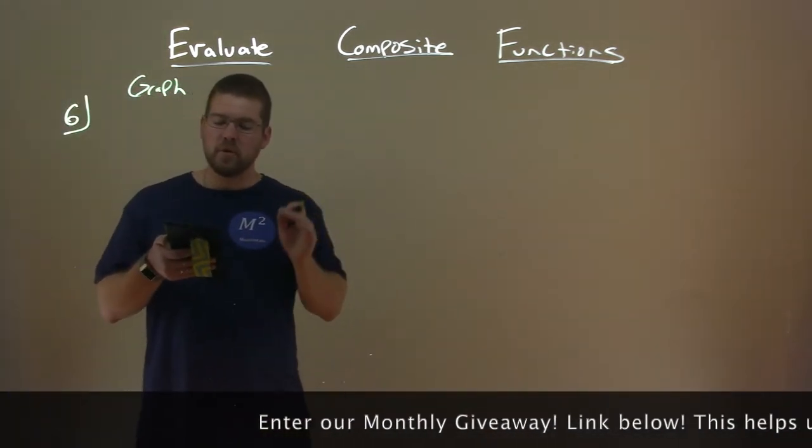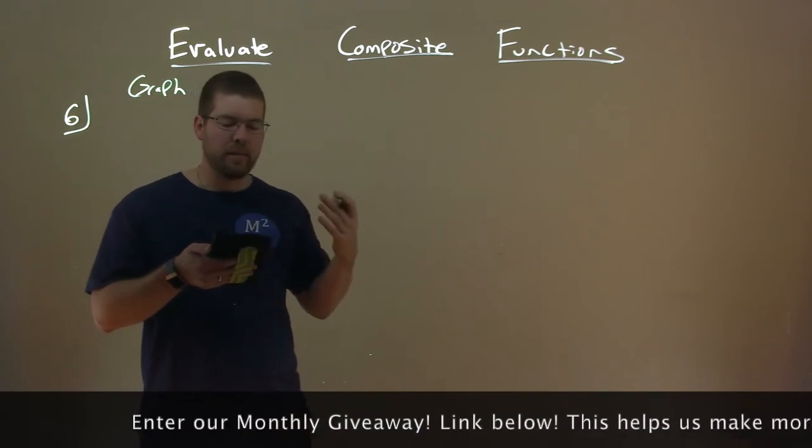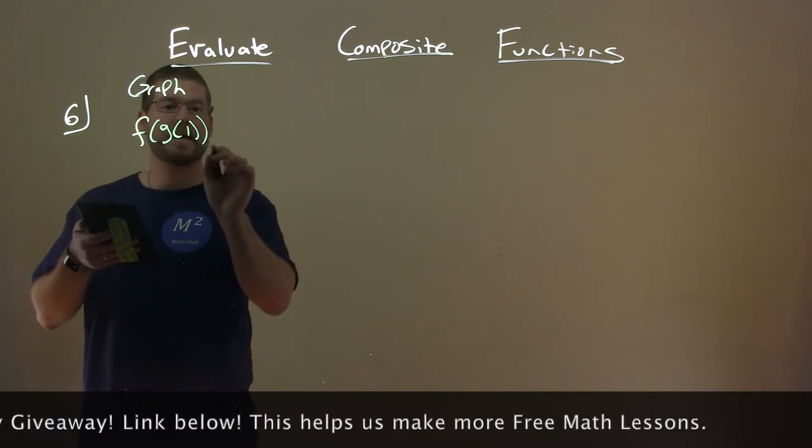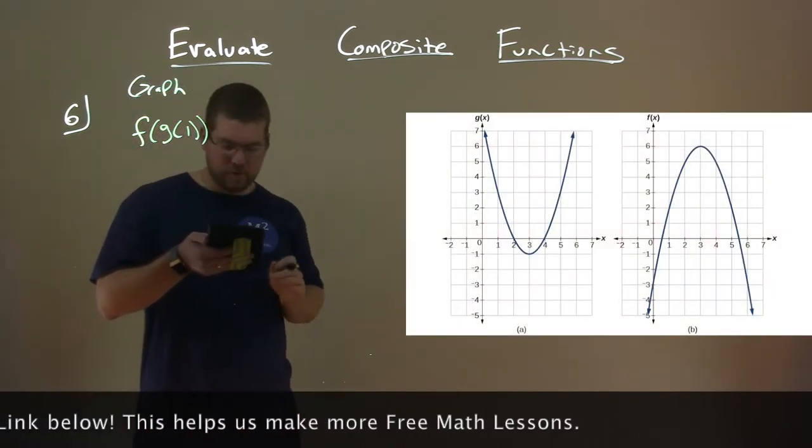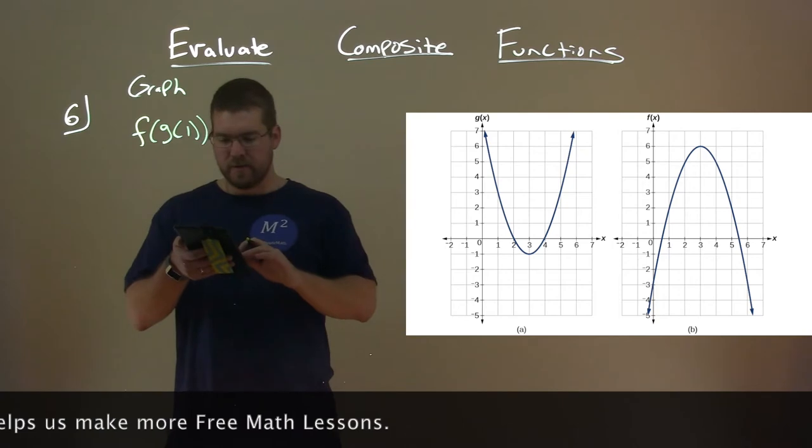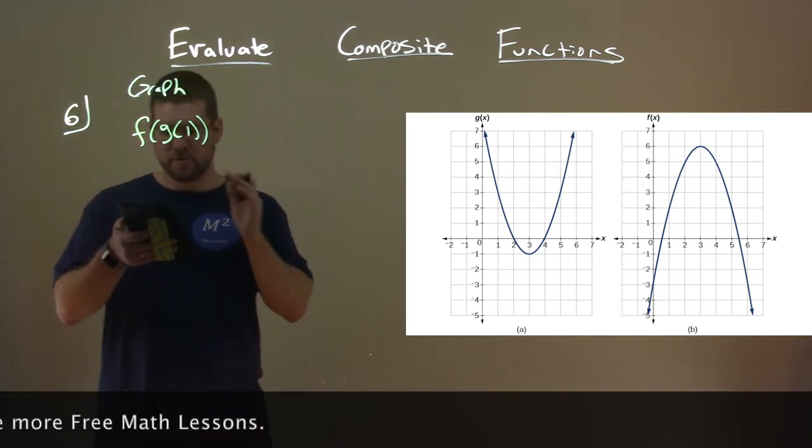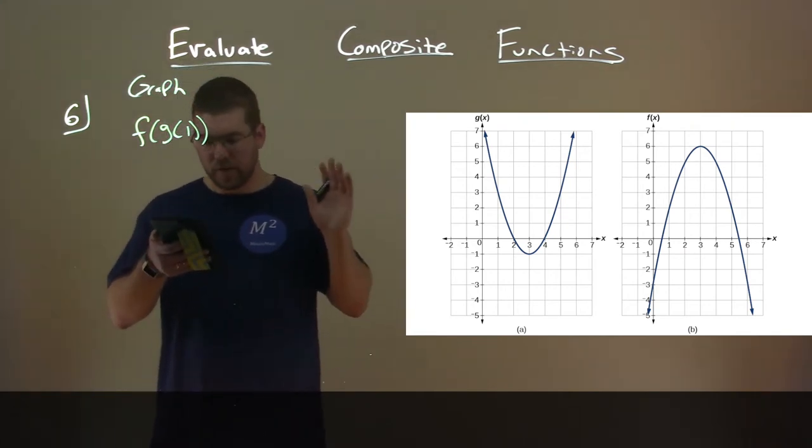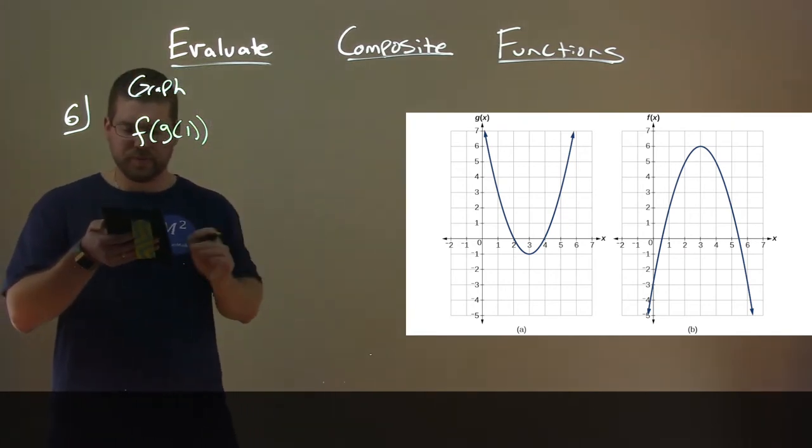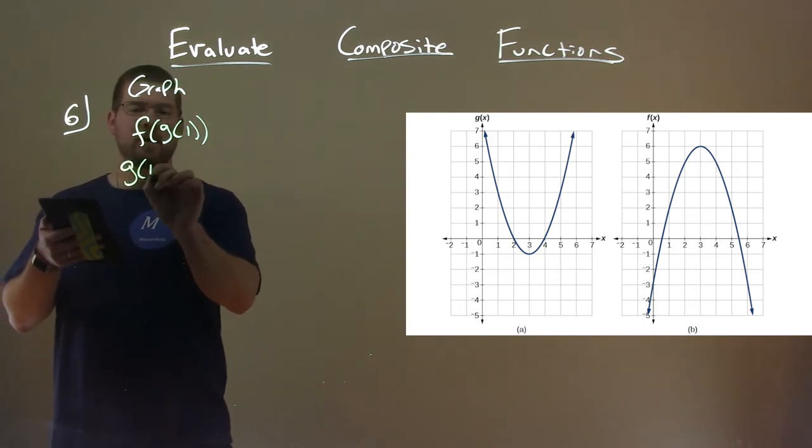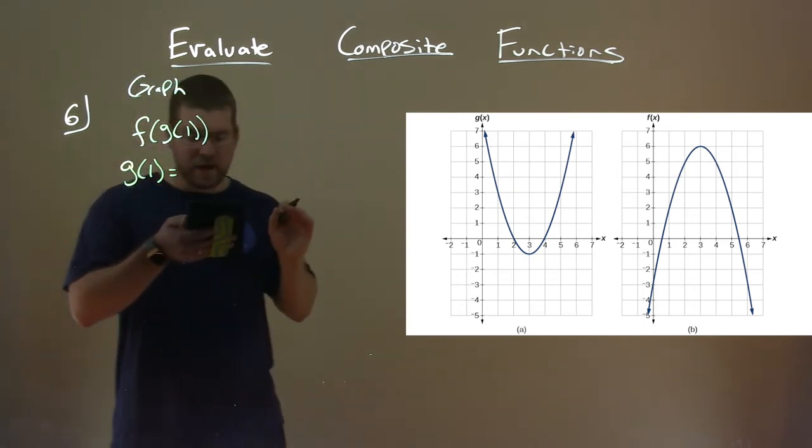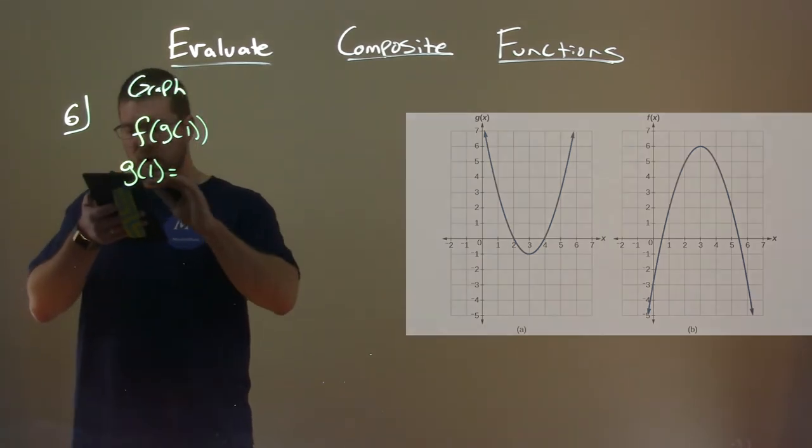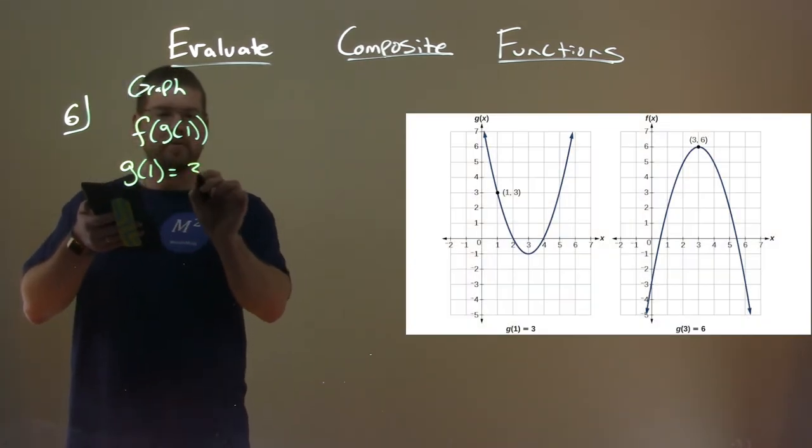So we're using a graph to evaluate a composite function. We want to evaluate what is f of g of 1 here. And we're given that graph over there. So what are we looking at here? We're going to find what f of g of 1 is. Well, we first want to find what is g of 1. So we look at the g of x function, the first one, and we want to find what is g of 1. So when x is 1, what's the output? The output there, you can see, is 3. So when x is 1, our output is 3, so g of 1 is 3.